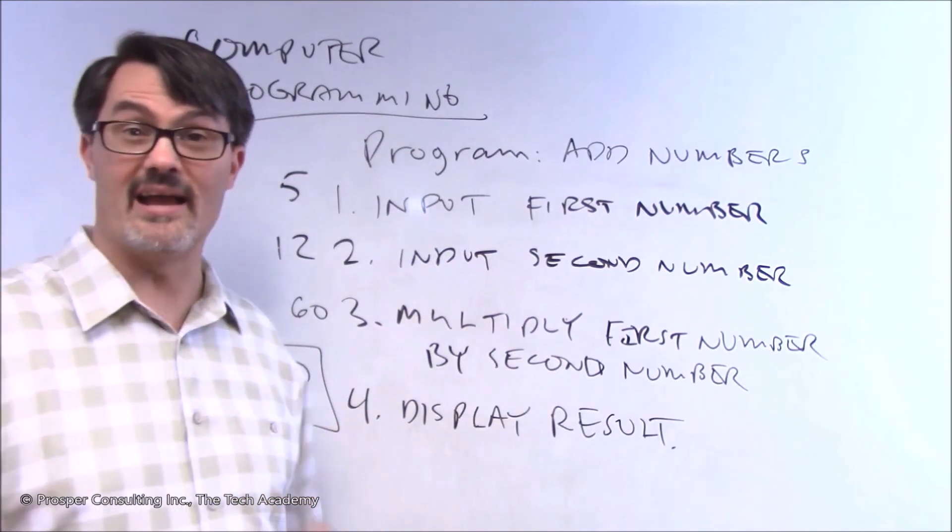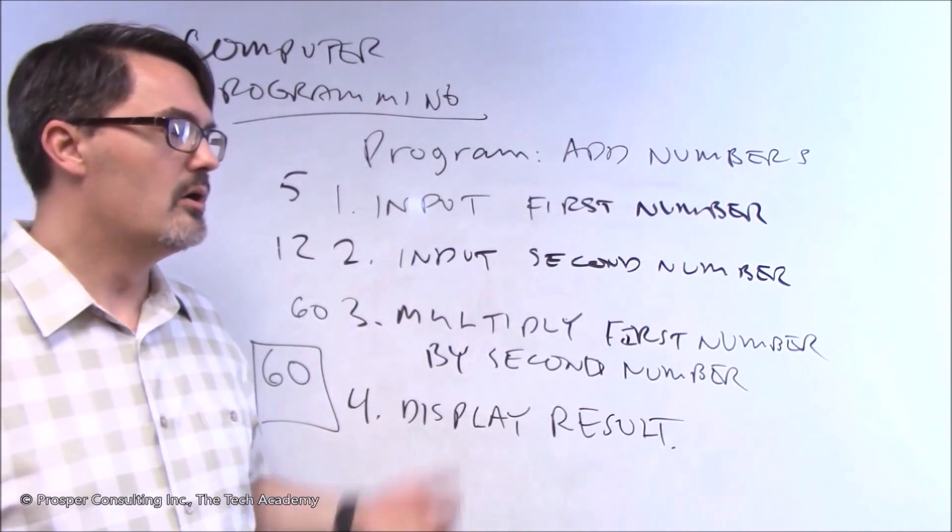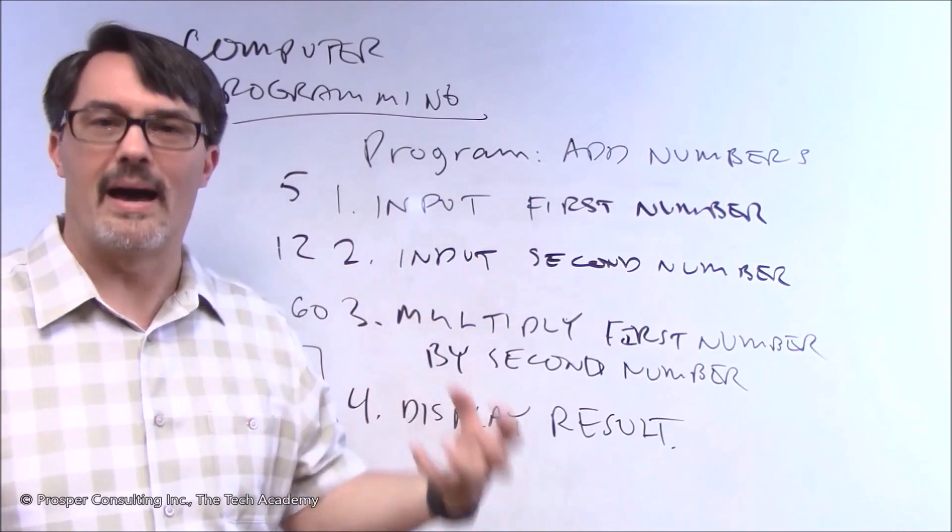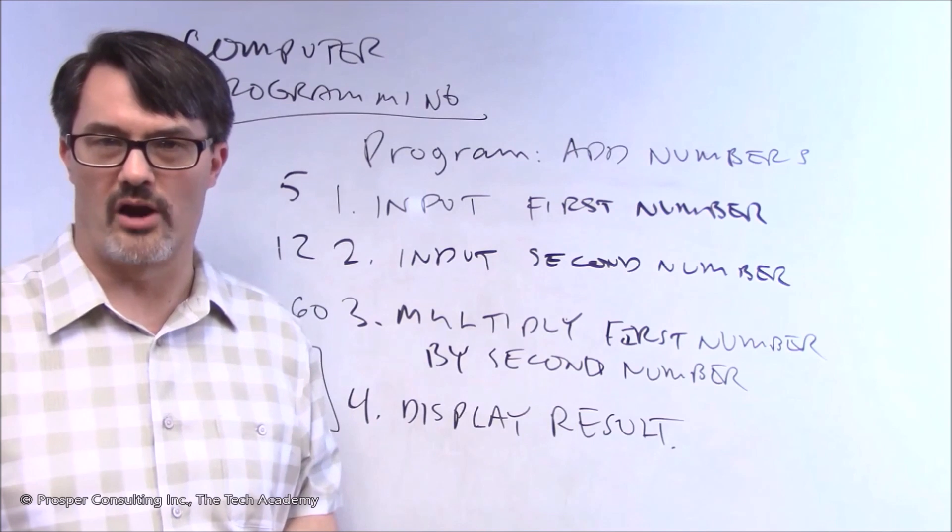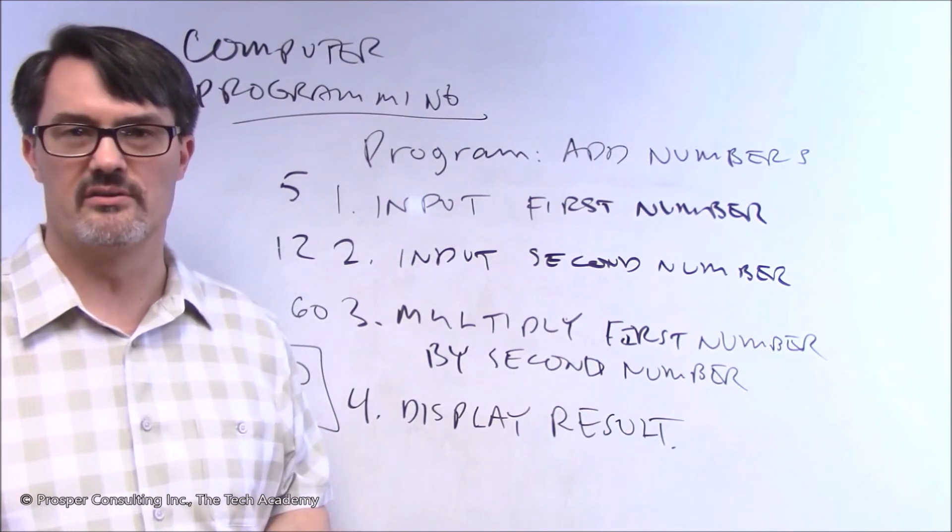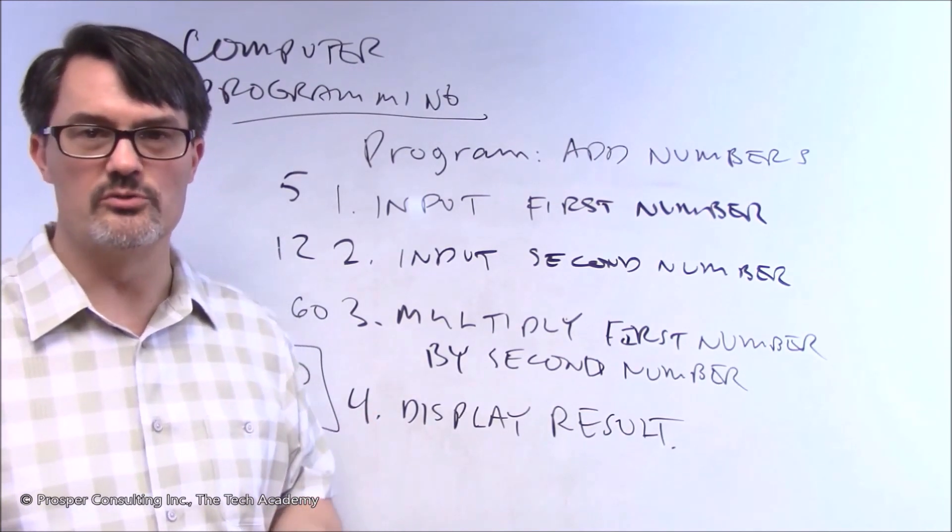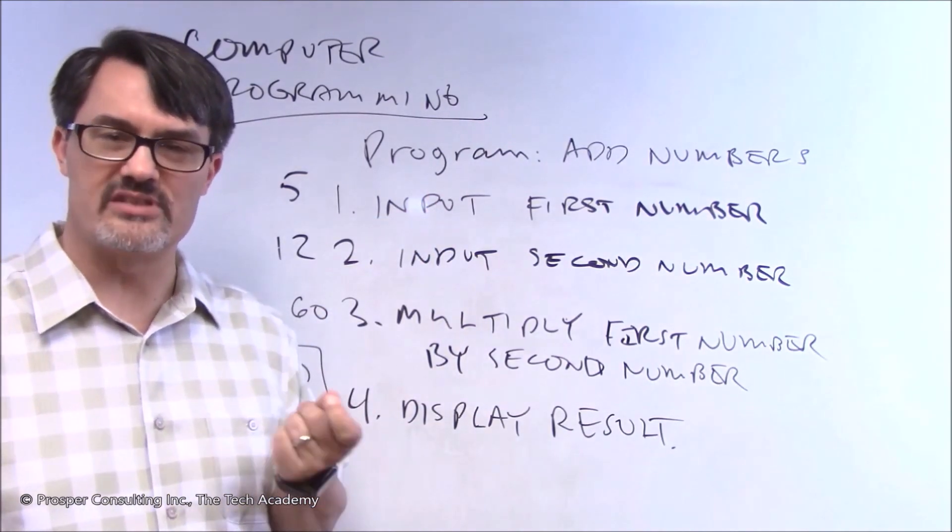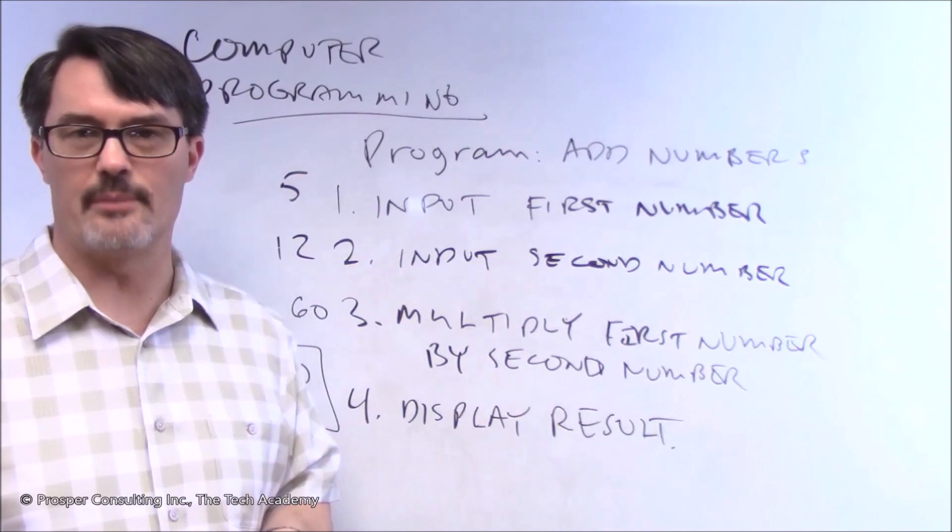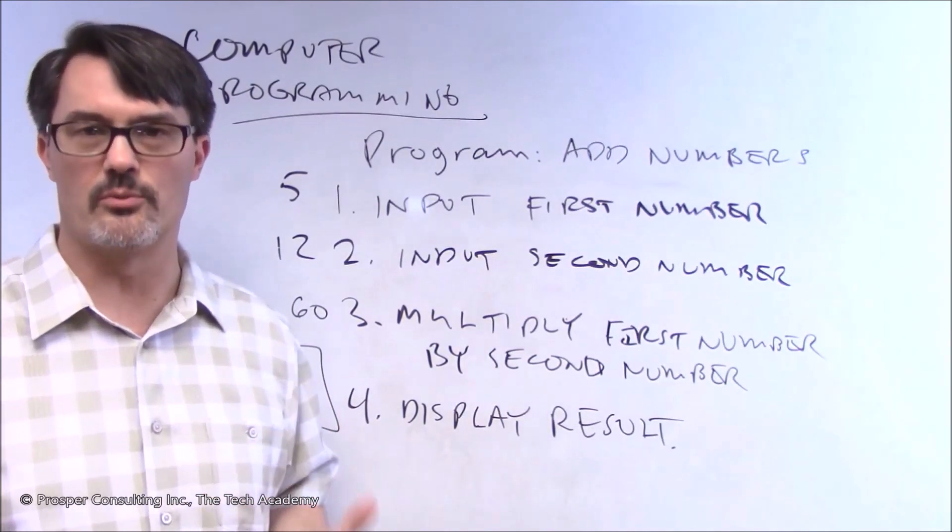You can tell somebody, hey, 5 times 12 is 60. The things that you do automatically, without even recognizing it, these are the things that, as a computer programmer, you need to start to look at and recognize. There is an exact process you use when you do math. Break that down into its individual components, its individual steps. And now you start to recognize how a computer program will work.